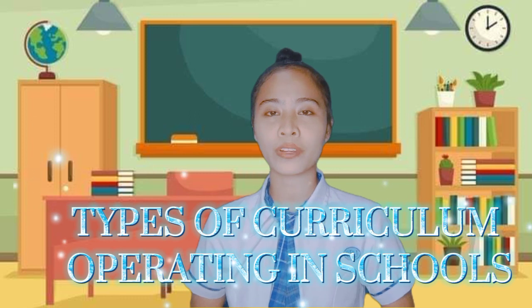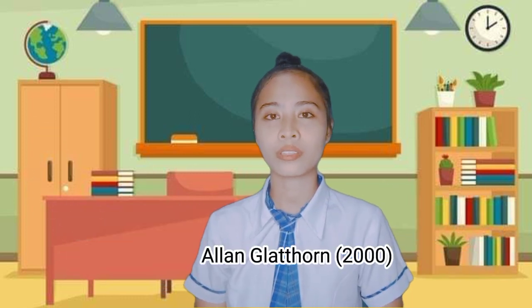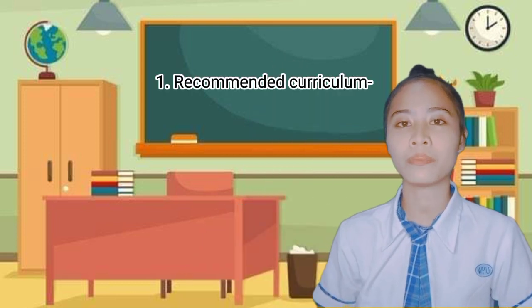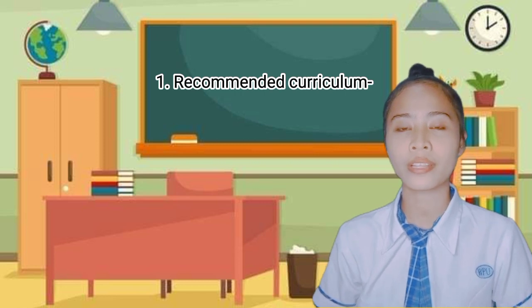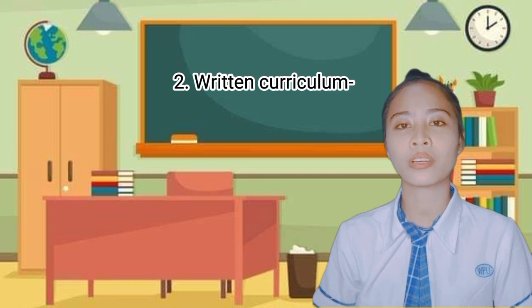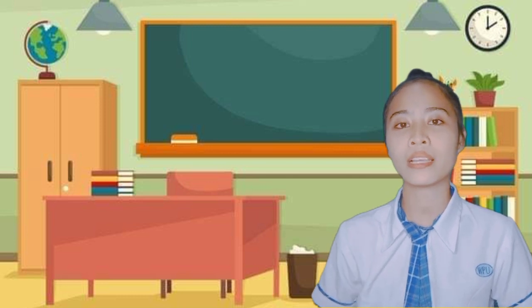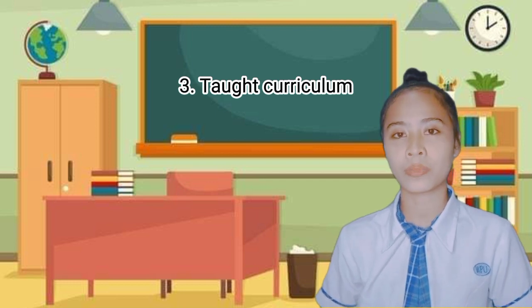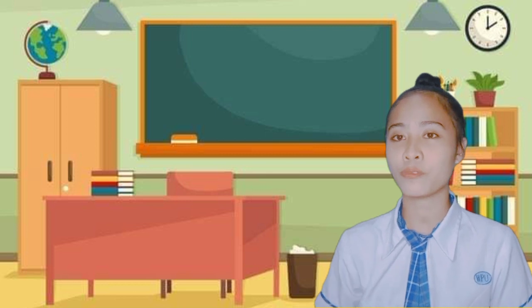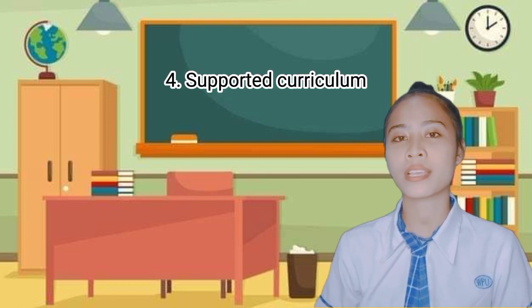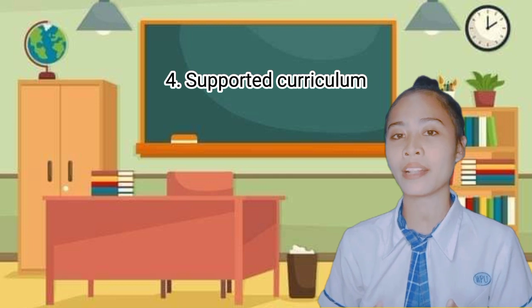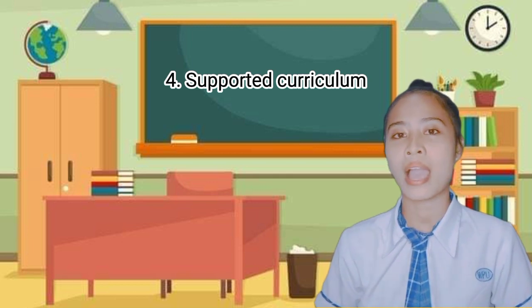For the types of curriculum operating in schools, Alan Glatthorn in 2000 describes seven types. First, recommended curriculum — proposed by scholars and professional organizations. Second, written curriculum — appears in school, district, and division or country documents. Third, taught curriculum — what teachers implement or deliver in the classrooms and school. Fourth, supported curriculum — resources such as textbooks, computers, audiovisual materials, and other supports for the implementation of the curriculum.